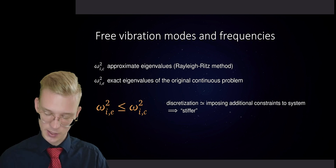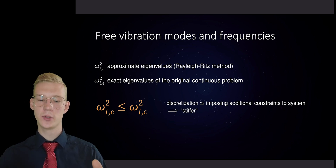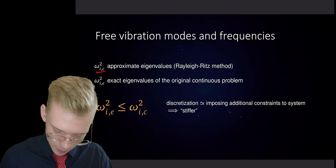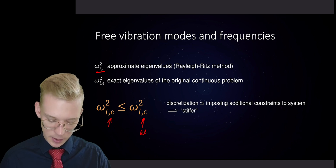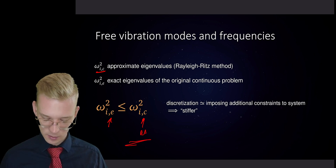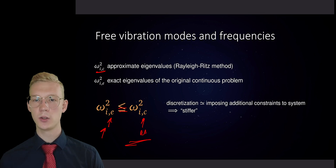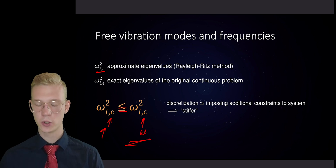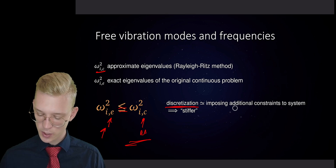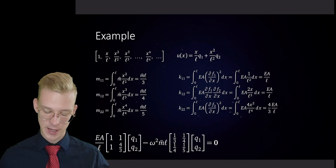The reaction forces introduce more stiffness into our system, because giving more constraints means the system has to use more complex shapes to vibrate, and those vibrations will be at a higher eigenfrequency. So the approximate eigenvalues from Rayleigh-Ritz are always greater than or equal to the exact eigenfrequencies. They are equal only if we use exactly the analytical solution as our shape functions. In general, applying a discretization adds constraints and makes our system stiffer.